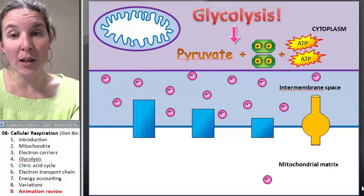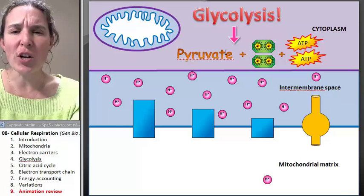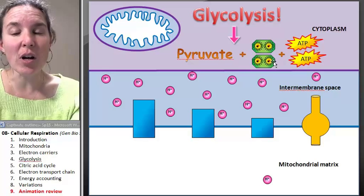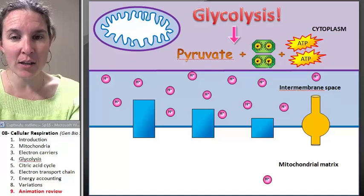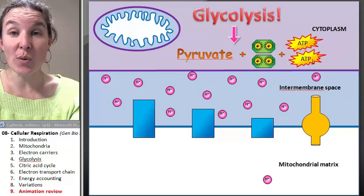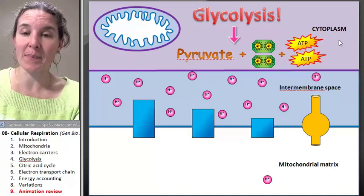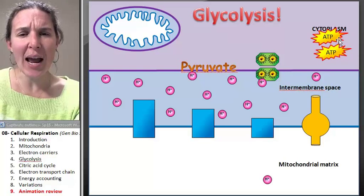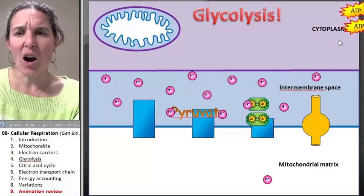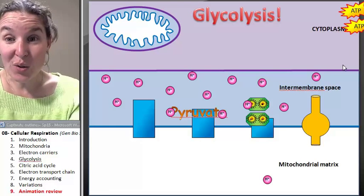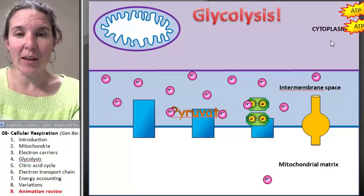Remember, we take a glucose molecule, we turn it into pyruvate. We get two electron carriers. Do you see my electrons here? And we get two ATPs. That's the end game of glycolysis. Let's see what happens to these things. Our ATP, where is it headed? It's going off to be used in the cytoplasm. Someone is going to do something with it.